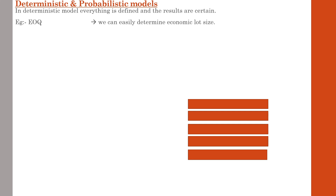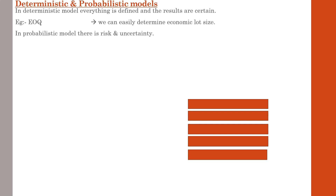With the help of EOQ, the inventory department can easily determine the economic order size. In a probabilistic model, as the term suggests, it gives a probable chance for the occurrence of a certain event. We've learned about probability, and the same concept applies to probabilistic models. Probabilistic models are otherwise known as stochastic models — stochastic meaning we are planning in advance for something related to the future.